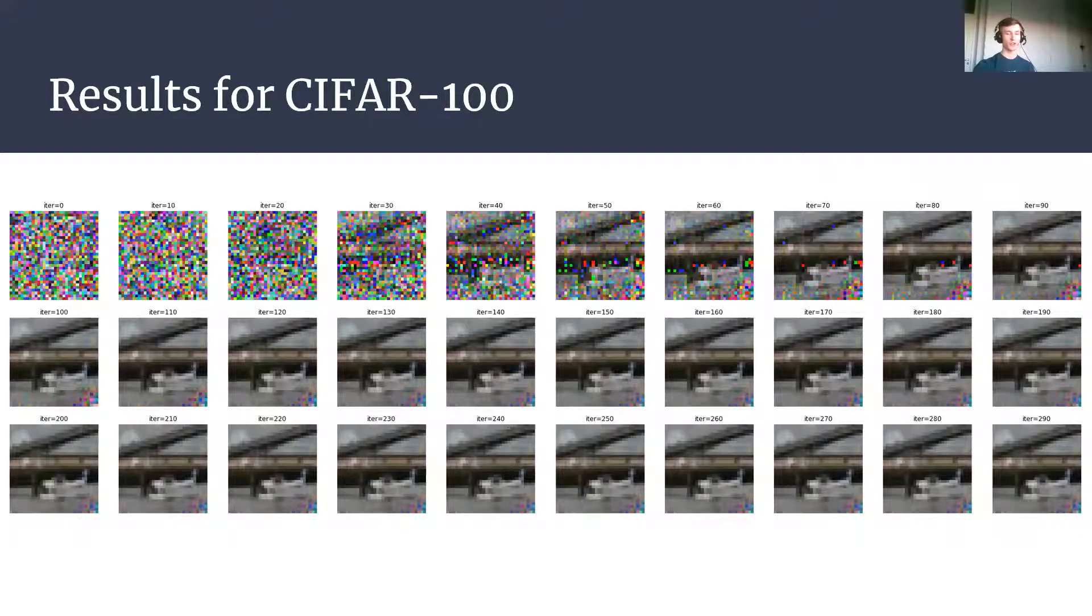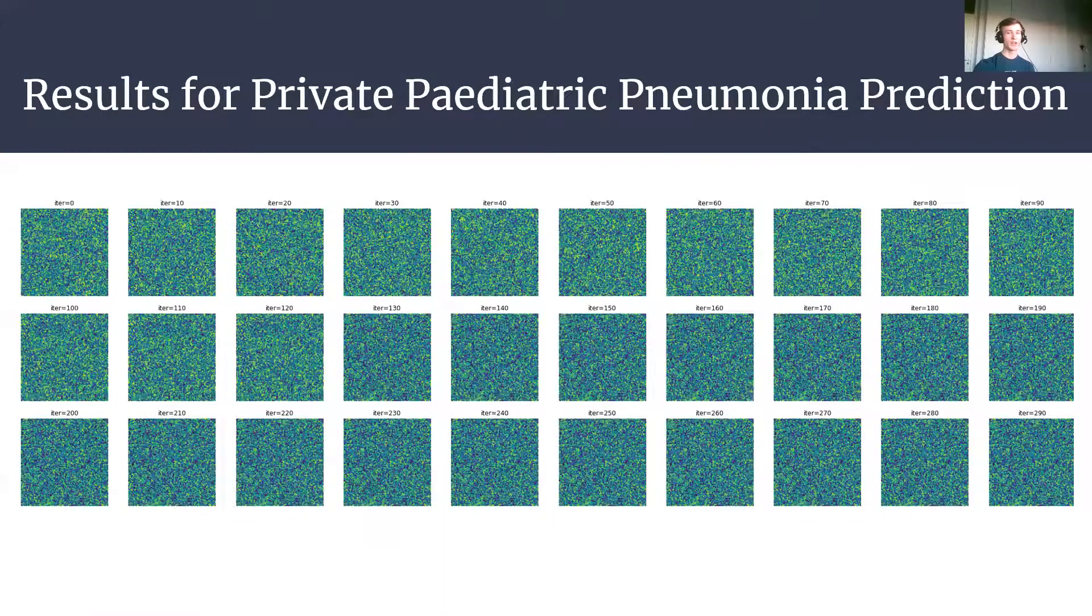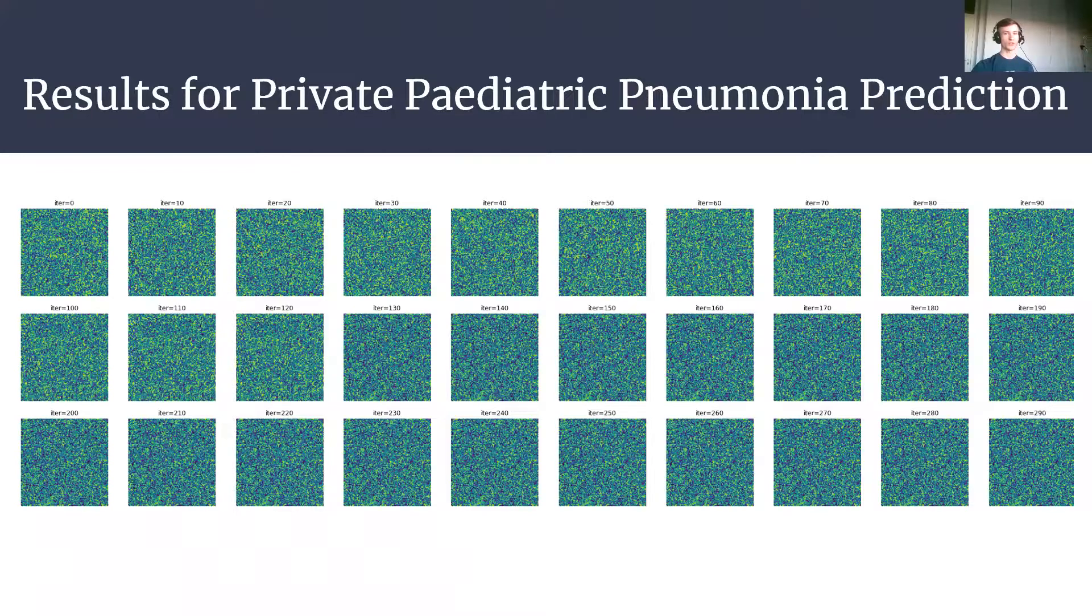However, as we also discuss from the results we obtain in our experiments, it doesn't really scale well for large images. So this dataset is called 4P, or Private Pediatric Pneumonia Prediction. It's pretty large,